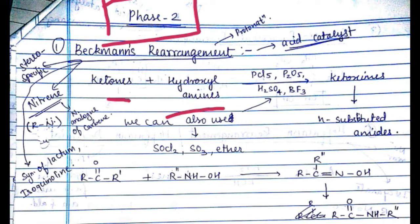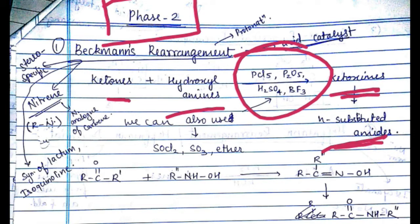So ketones reacted with hydroxyl amines in presence of PCl5, P2O5, H2SO4, BF3 will give us ketoxymes that is N-substituted amides in presence of acid catalyst and the intermediate form is nitrine.